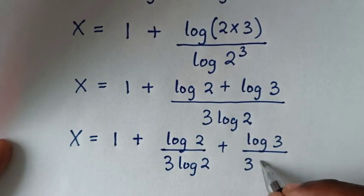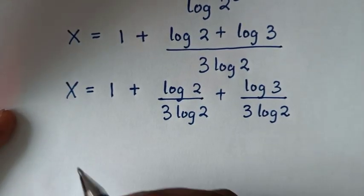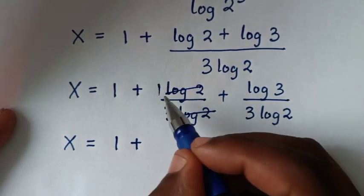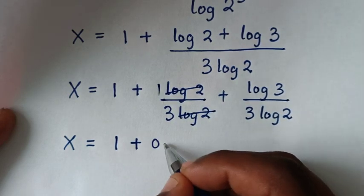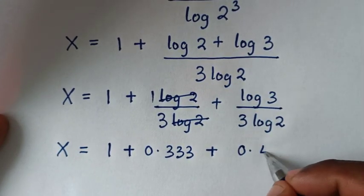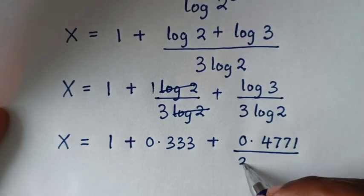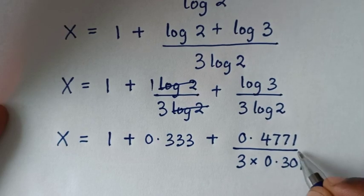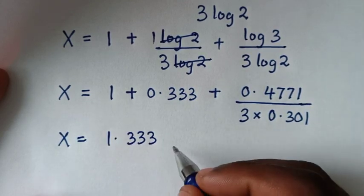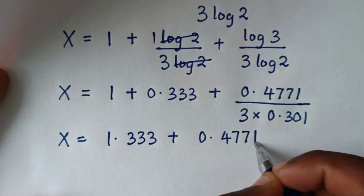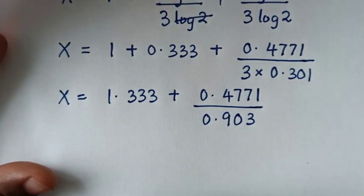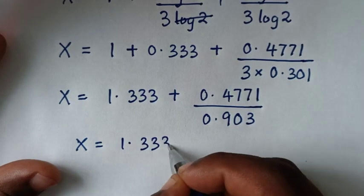Log of 2 divided by log of 2 is 1, so that term becomes 1 over 3, which is 0.333 in decimals. For the remaining term, log of 3 is 0.4771 and 3 times log of 2 is 3 times 0.301, which is 0.903. So x equals 1.333 plus 0.4771 over 0.903.